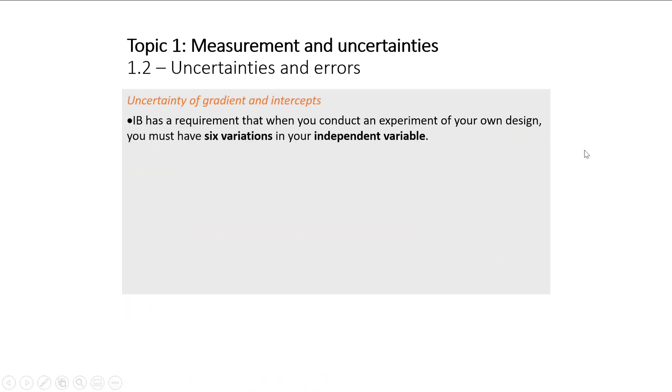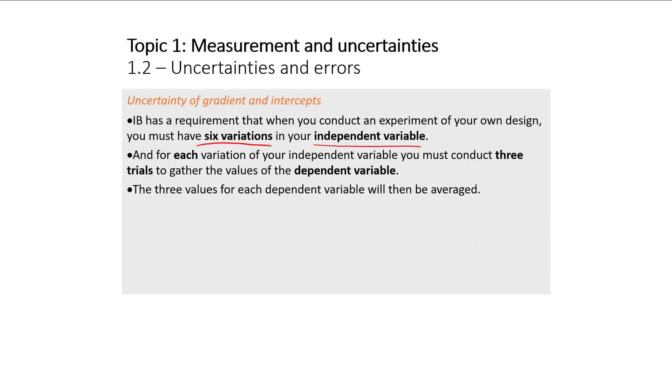You'll have to do some experiments. Whenever we do experiments of your own design, you're going to need to do six different variations of your independent variable. And for each variation you have to conduct at least three trials to gather the values of your dependent variable. And what we're going to do with these three trials is just average them together. This will help account for some of the random uncertainty in our experiment that we can't control.